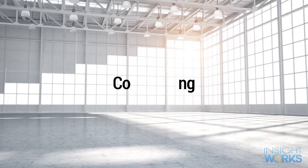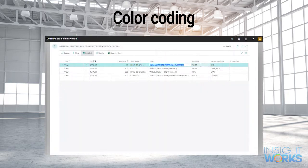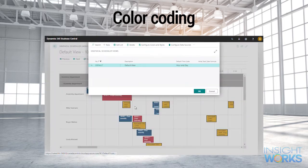Finally, you can use color coding to identify the status of an operation, making it easier to identify the specific state of jobs.